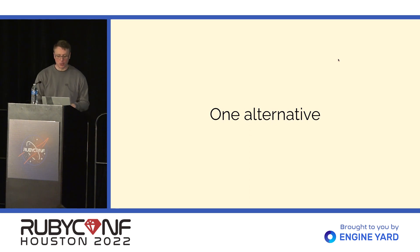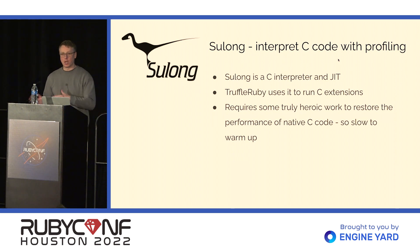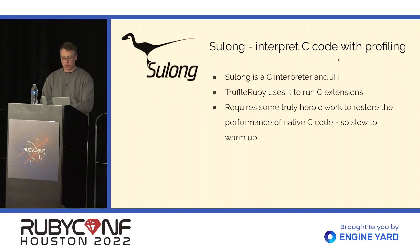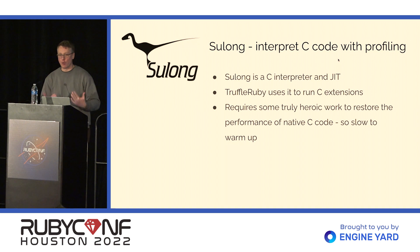There's an alternative TruffleRuby uses to run legacy C code, and that's Sulong — an interpreter for C code that just-in-time compiles your C code. TruffleRuby uses it to run C extensions. It requires some truly heroic work to restore the performance of native C code, so it's very slow to start up, but it does mean we can optimize C code like that rb_equal call. So there is one alternative, but it's pretty heroic to make it work.